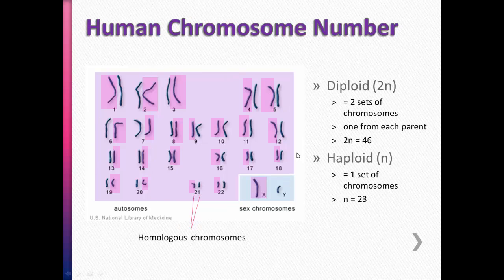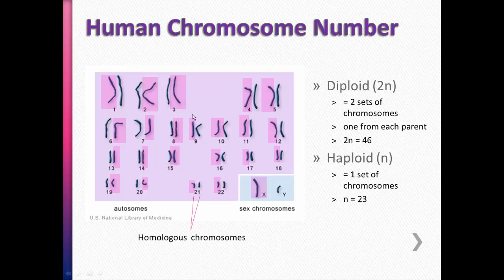If a cell has both sets of chromosomes — one set from mom and one set from dad — then we say that cell is diploid, symbolized as 2n, and our 2n number is 46. Haploid is when you only have one set of chromosomes, symbolized as n, so n equals 23. The process of meiosis takes these homologous chromosomes and separates them so that every sex cell — either the sperm or the egg — has one out of the two homologous chromosomes.